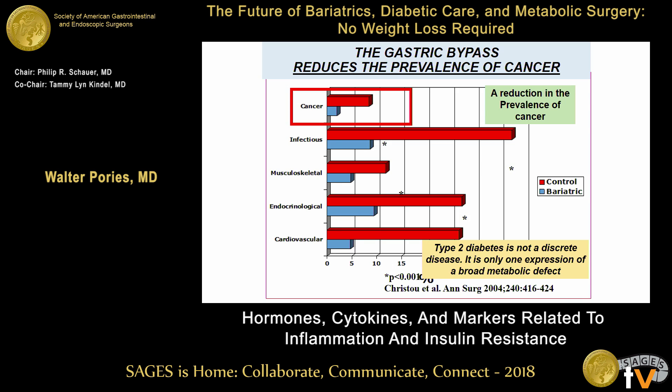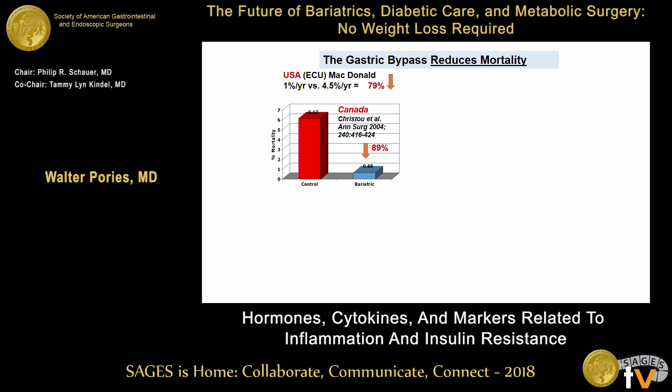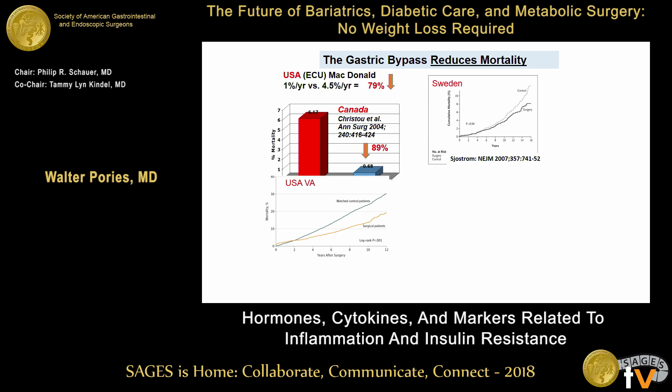When you look at all this together, the most important level of distinction is really mortality — not HbA1c or blood pressure. Our mortality went down 78%. Here are the Canadian figures: 89%. Here is the data from Sweden, the Veterans Administration hospitals, and the recent report from Norway. That's really the final vision.